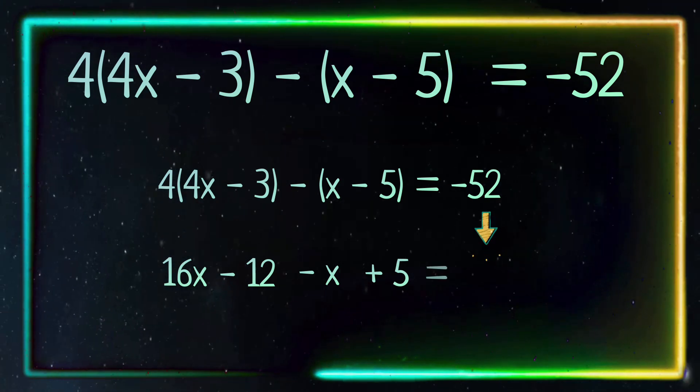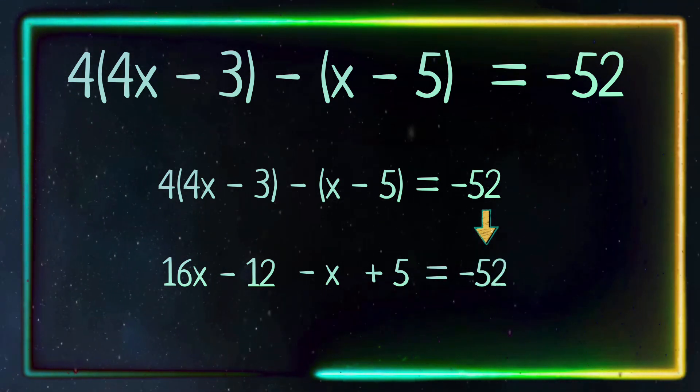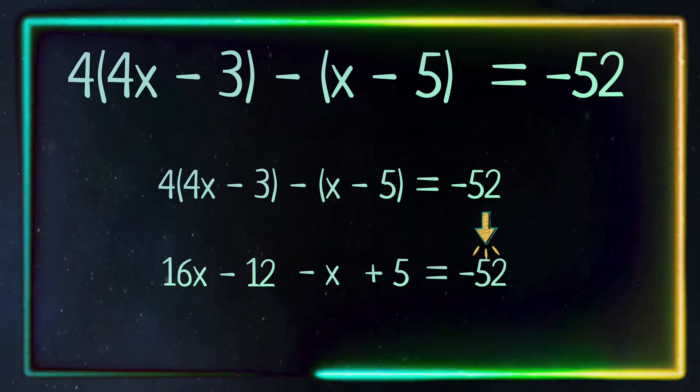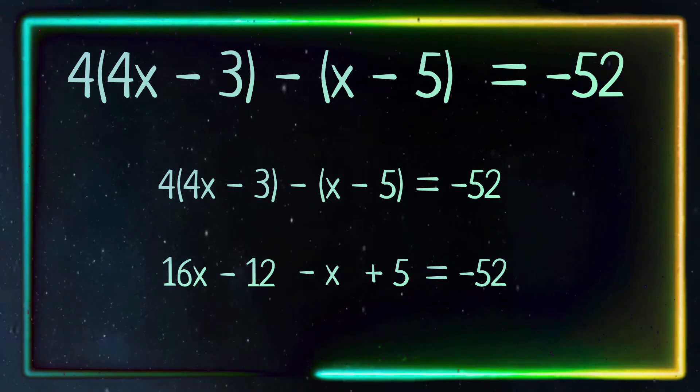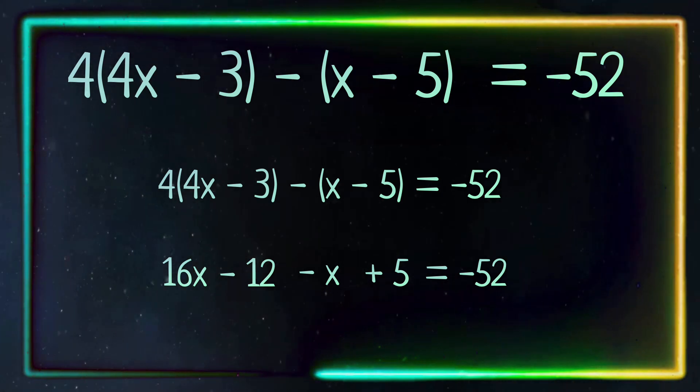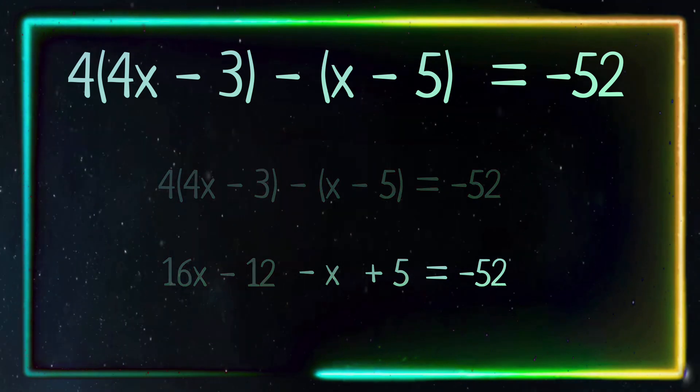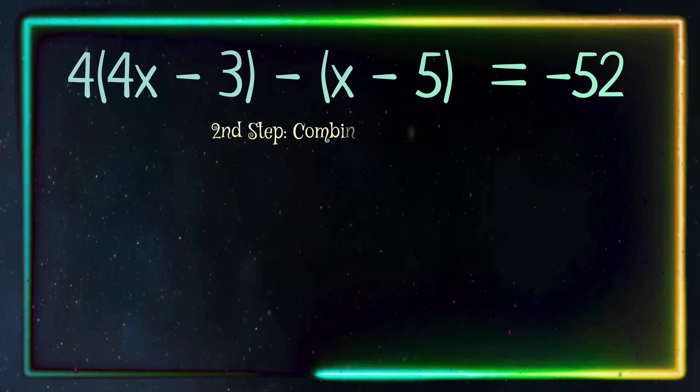Now we bring down the negative 52 at the end. Our equation now reads 16x minus 12 minus x plus 5 equals negative 52. Next step is to combine like terms.